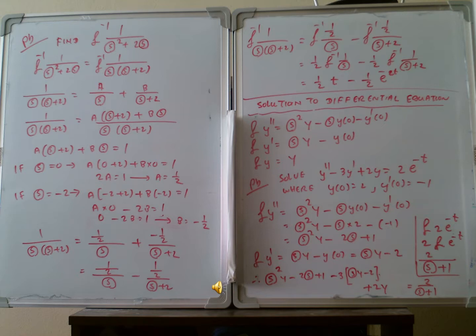So in this case I will determine the equation, so we have to factorize s squared plus 2s. So that will be 1 divided by s multiplied by s plus 2. So 1 divided by s multiplied by s plus 2 can be factorized, so that will be A by s plus B by s plus 2. Then we have to combine so that A multiplied by s plus 2 plus B multiplied by s, divided by s multiplied by s plus 2, equals 1 divided by s multiplied by s plus 2.